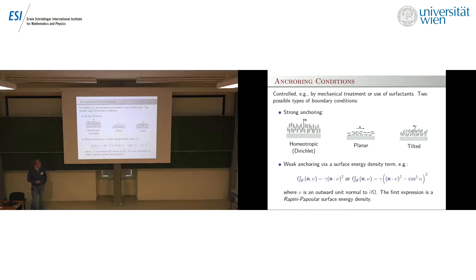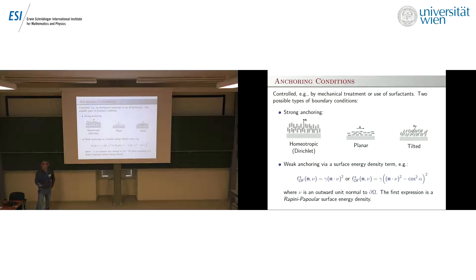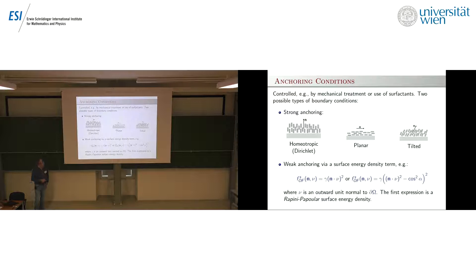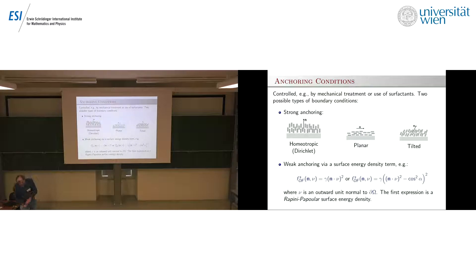The second choice is the so-called Rapini-Papoular energy, which simply penalizes for the director deviations from the preferred orientation on the boundary. If the parameter gamma is positive, the director wants to be perpendicular to the unit normal nu; if gamma is negative, it wants to be parallel to nu. More generally, one can impose tilted boundary conditions. So we have two choices: either add a boundary integral penalizing deviation, or impose Dirichlet boundary data.